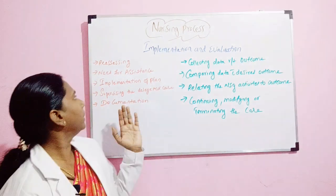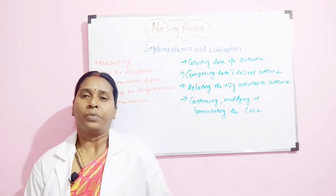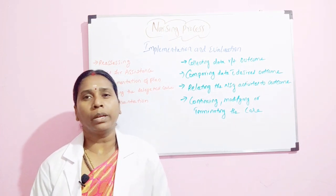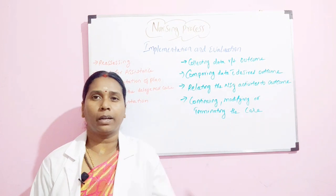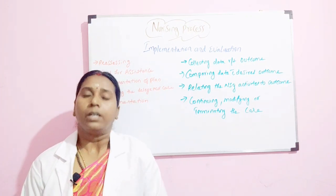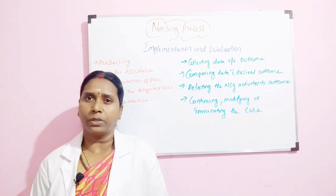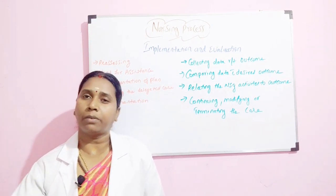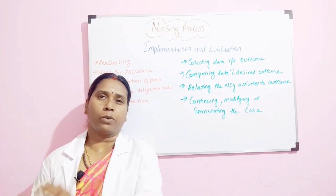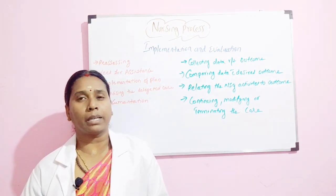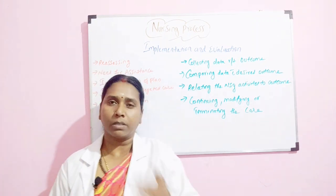Then comes the implementation of the plan — whatever you have planned, you start to implement. I tell students: never write 'provide 6 liters of oxygen' if you are actually administering 4 liters. Write what you are actually doing. For example, you planned for 6 liters of oxygen, but the patient achieves 99% saturation on 4 liters, so you write 'administered 4 liters of oxygen to the patient.'